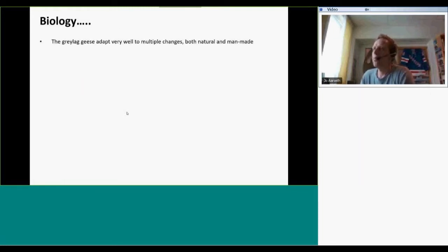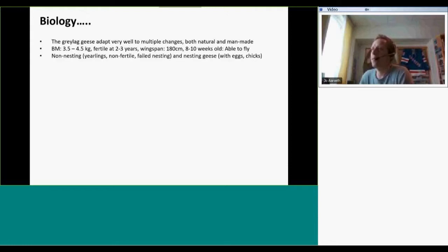Some more biology. The greylag geese adapt very well to multiple changes, both natural and man-made. The body mass is approximately three and a half to four and a half kilo, and they are fertile after two to three years. They have a wingspan of 180 centimeters, and after eight to ten weeks old they are able to fly. We divide the greylag geese into two groups: the non-nesting which is yearlings, non-fertile or failed nesting, and nesting geese with eggs or chicks.